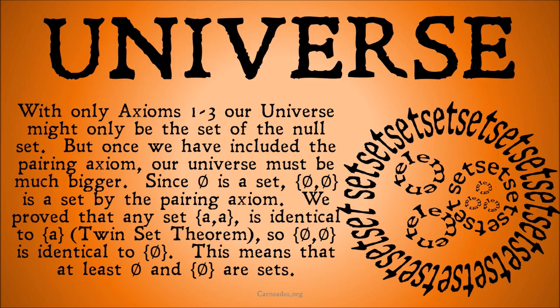With only axioms one through three, our universe might only be the set of the null set. But once we've included the pairing axiom — axiom four — our universe must be much bigger. We've already proved that the set of A and A is identical to A (the twin set theorem), so the set of the null set and the null set equals the set of the null set. This means at least the null set and the set of the null set are sets, so there are at least two members of the universal class.